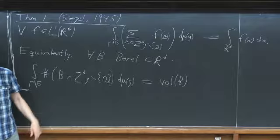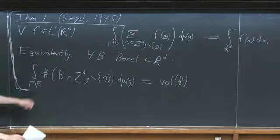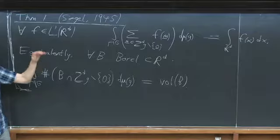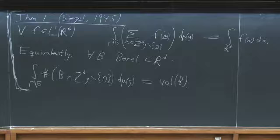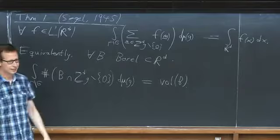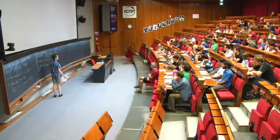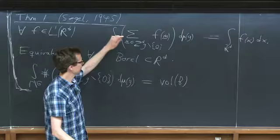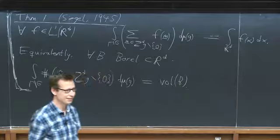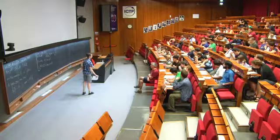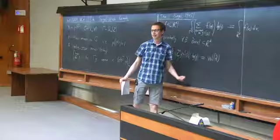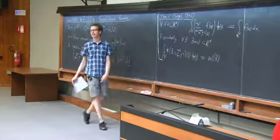If B is unbounded but has finite volume, the result is immediate from the formula. If B has infinite volume then both sides will be infinite, but the formula is still well defined for non-negative integrands. The formula holds whether B is bounded or unbounded.